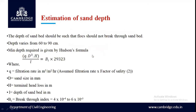Estimation of sand depth. The depth of the sand bed should be such that the flocs should not break through the sand bed. That can be calculated by Hudson's formula: Q × D × H divided by L equals BI × 29323. Here Q is the filter rate in cubic meters per square meter per hour, D is the size of the sand in mm, H is the terminal head loss, L is the depth of the sand bed, and BI is the breakthrough index. That value should be in the range of 4×10⁻⁴ to 6×10⁻³.